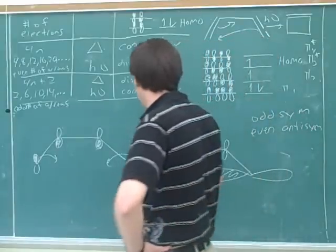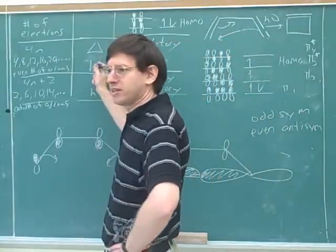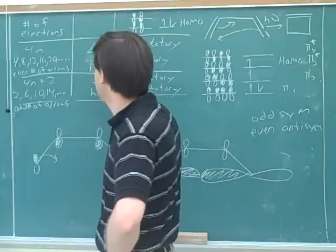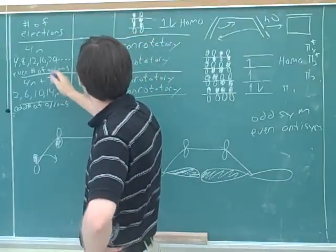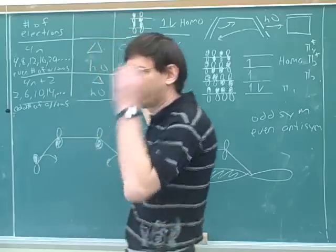Well, is that con or disrotatory? Disrotatory. And now we've explained this row in the table. Now we've proven this row in the table, which says that when we have an even number of arrows under photochemical conditions, we should have a disrotatory outcome.